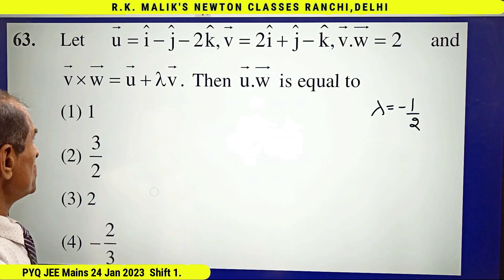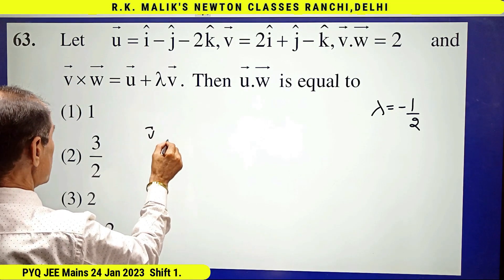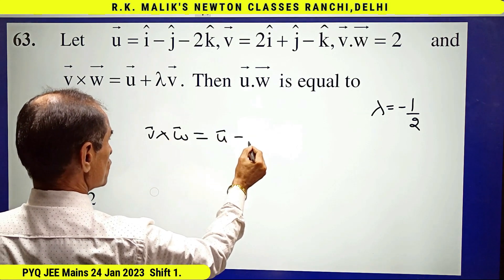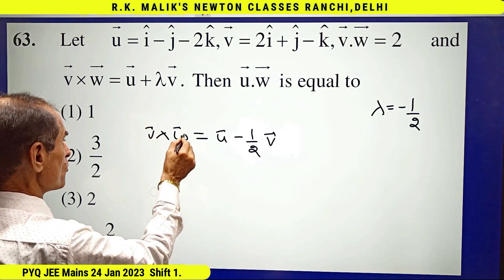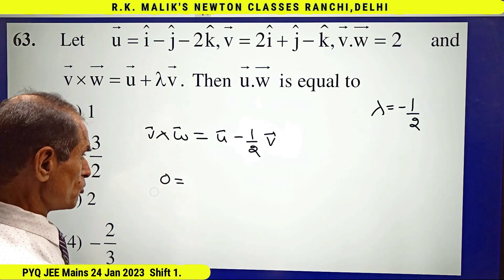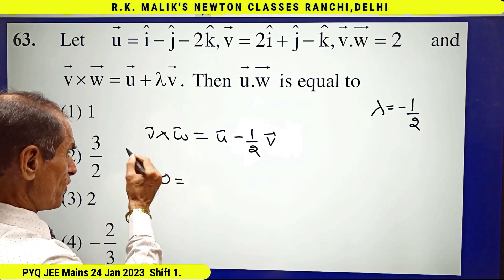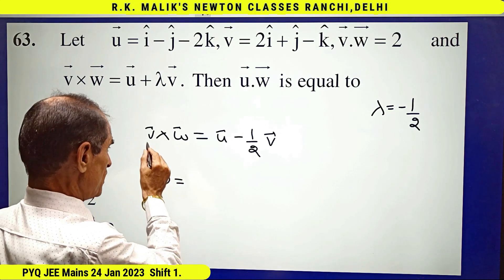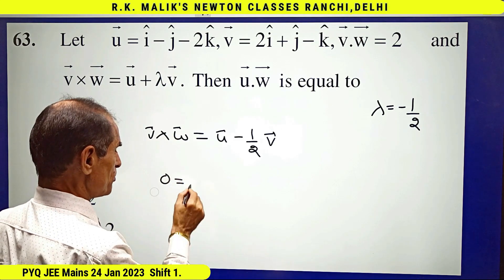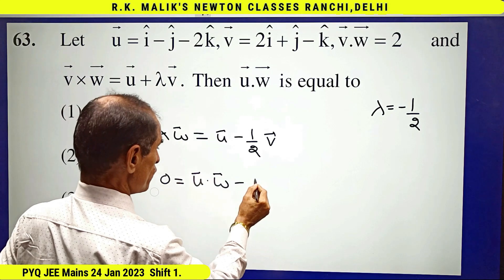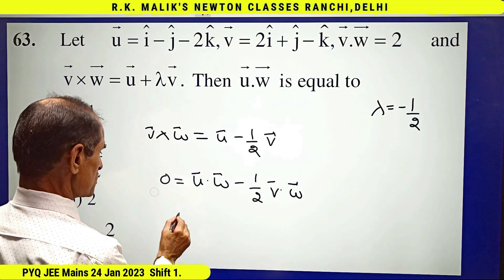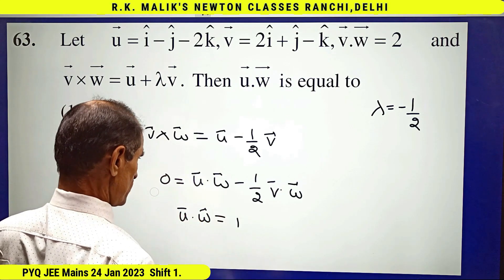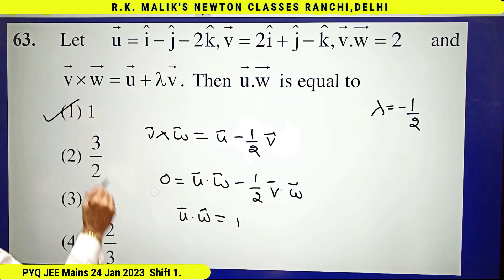After taking λ = −1/2, the given equation becomes v×w = u − (1/2)v. Now I take dot product with w on both sides. The left-hand side will be 0 because in the scalar triple product, if any two vectors are the same, the answer is 0. Hence we get u·w − (1/2)(v·w) = 0, and since v·w = 2, we get u·w = 1. Hence the first choice is the correct answer.